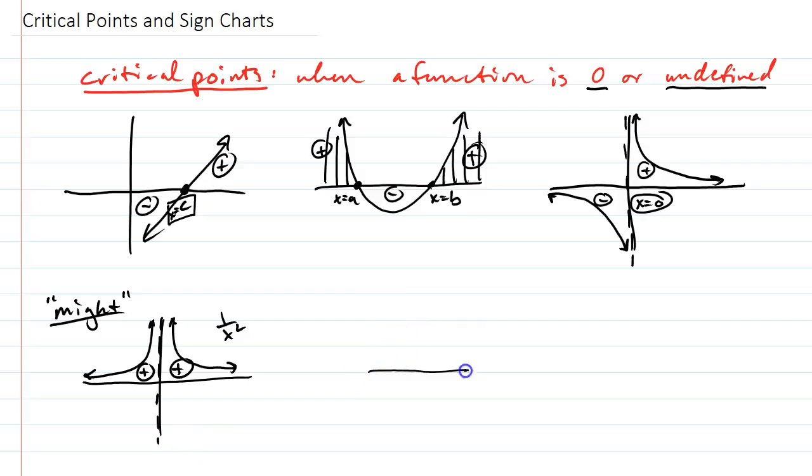Also, similarly with parabolas, sometimes you have a parabola that just looks like this. The critical point is right there. But, on each side of this critical point, my function has not actually crossed the x-axis. It just bounced off. So, again, critical points are where the function might switch signs.